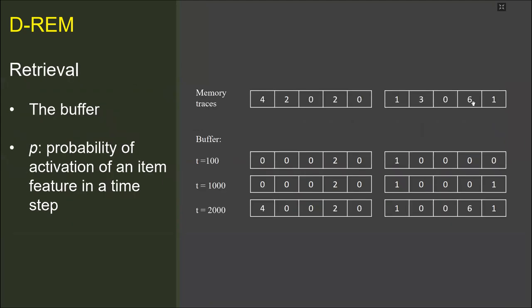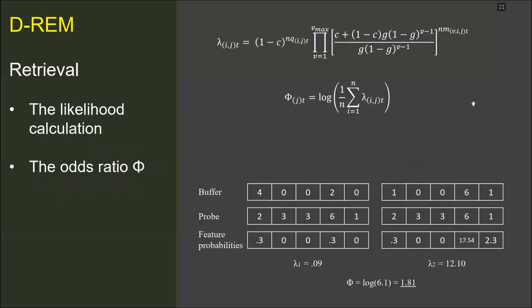In each recognition test trial, the item features of the memory traces are activated gradually. In each time step, the item features are activated with the probability of p, and they are held in the buffer. Thus, the number of the activated item features gradually increase in each time step. The Bayesian likelihood of a test item being a target is calculated using the active item features, which are held in the buffer.